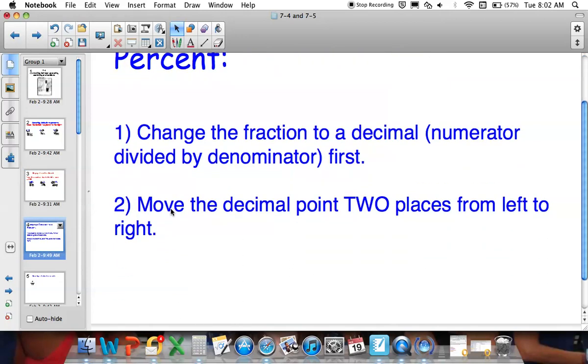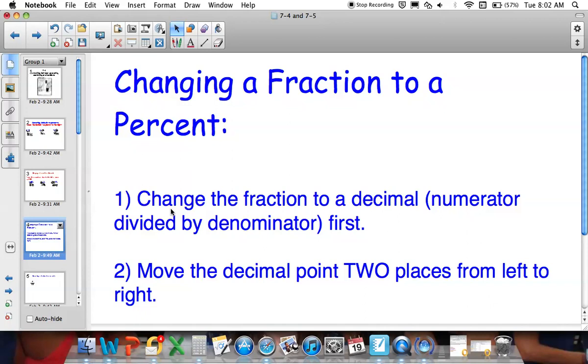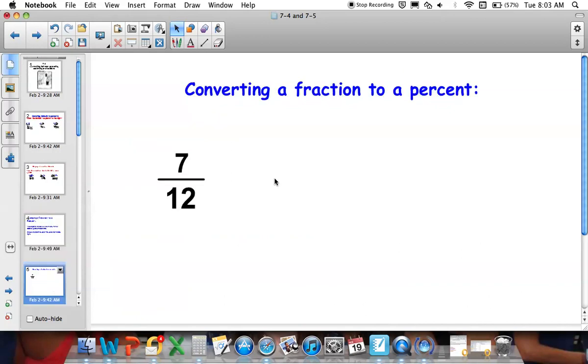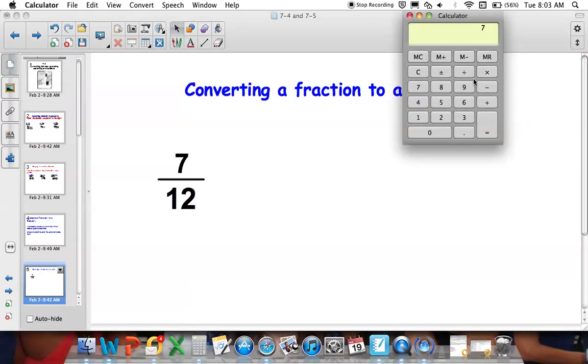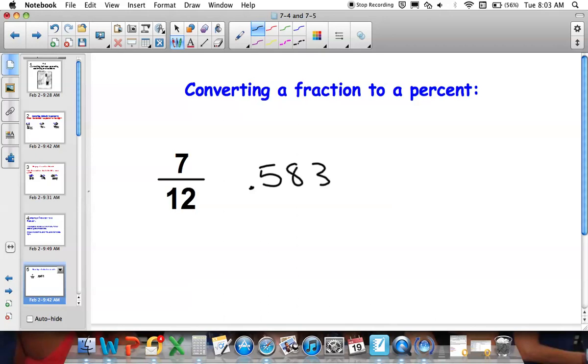Now, changing a fraction to a percent. When you change a fraction to a percent, it's important to first change the fraction to a decimal, which is just your numerator divided by your denominator. Note that you can use calculators, so don't try to do this all by hand. And then you move the decimal two places from left to the right. So, it's just converting a decimal to a percent after that. So, let's do one example. Here's the example of 7 twelfths. So, we're going to first convert this fraction to a decimal. So, let's pull up your calculator. You take 7 and you divide it by 12. Looks like we have a repeating decimal. So, I'm going to round this to 0.5833. We know that that 3 goes on and on to infinity, but that's really not that important for us.